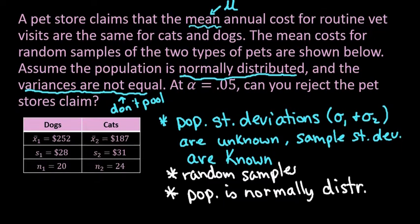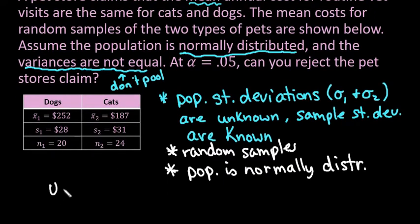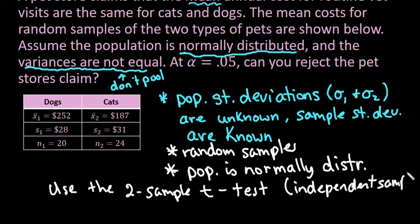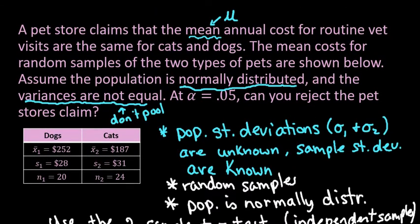Now that we've stated our conditions, we know what we're going to use: the two-sample t-test with independent samples. I will do another video for dependent samples and one for independent samples where you do pool. For this one, we are not pooling because the variances are not equal. Most of the time you will use this non-pooling method. Pooling is harder to do by hand, and it's dangerous to pool if the variances are not equal.